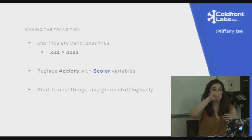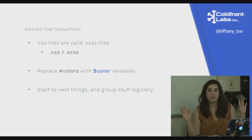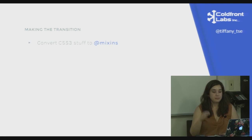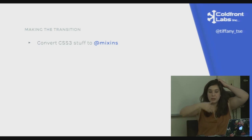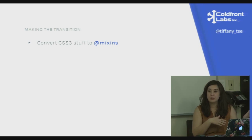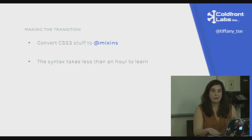Then start to nest things — look for logical groups in your existing CSS file. If you have `.box ul`, `.box li`, `.box a`, nest all of that and suddenly it's three lines shorter and easy to read. Next, convert CSS3 stuff into mixins: anytime you have vendor prefixes, put them in a mixin and use `@include`. The syntax only takes an hour to learn, so making the transition shouldn't be that hard.